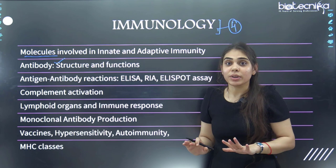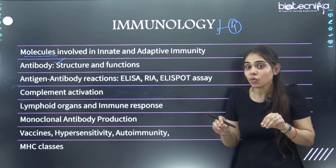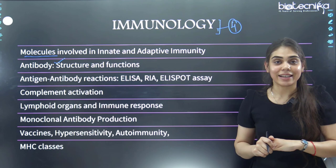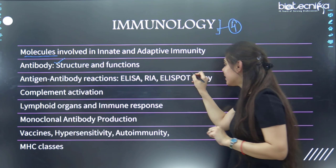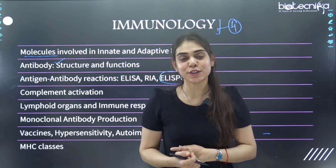Next is antigen-antibody reactions. What is ELISA? What is RIA? Many times they also focus on ELISPOT assay — what is the method used for measuring the concentration of cytokines in serum? That is ELISPOT. Remember this.